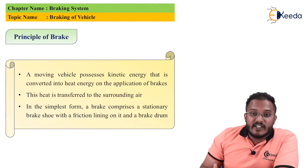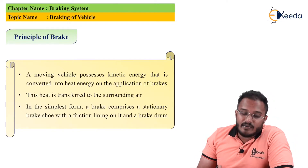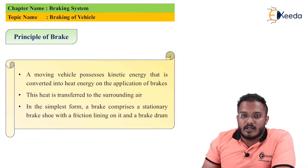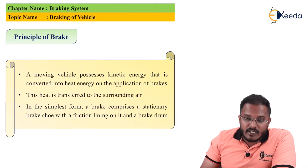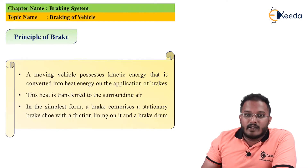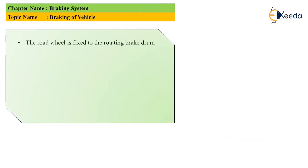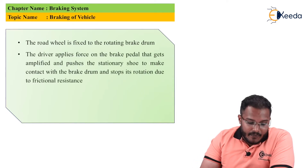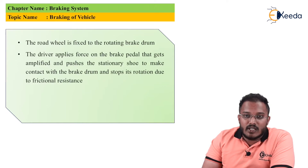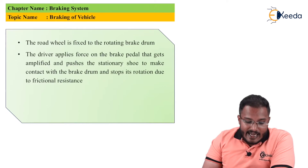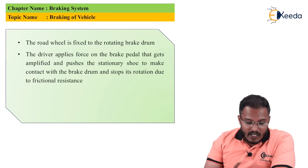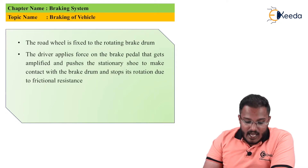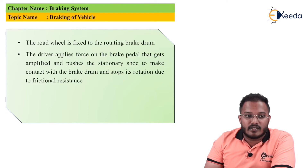This heat is transferred to the surrounding air. In its simplest form, the brake comprises a stationary brake shoe with friction lining on it and a brake drum. The road wheel is fixed to the rotating drum axle. The driver applies force on the brake pedal, which gets amplified and pushes the stationary shoe to make contact with the brake drum and stops its rotation due to frictional resistance.